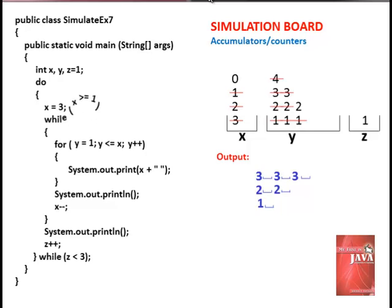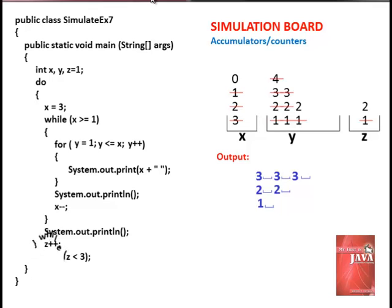Look back on the while statement. Is x greater than or equal to 1? False — 0 is not greater than or equal to 1. The cursor advances another line as another system.out.println is implemented. Increment x — x is now 2. Is x less than 3? Is 2 less than 3? True.